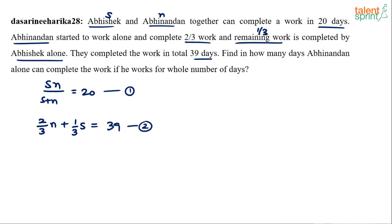Two equations, two unknowns. Can you solve? Yes. Now if options were given, see what do we have to find out? Find in how many days can Abhinandan alone complete the work if he works for the whole number of days. So what is N? If options were given we could have substituted to verify which will satisfy both. Here you'll have to play with it for some time.